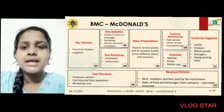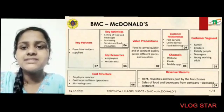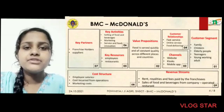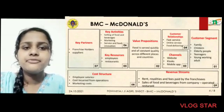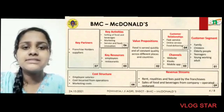Cost Structure: Employment Salaries, cost incurred from operations and marketing costs. Revenue Streams: Rent, Royalties and Fees paid by the Franchisees, and Sales of Food and Beverages from the company.